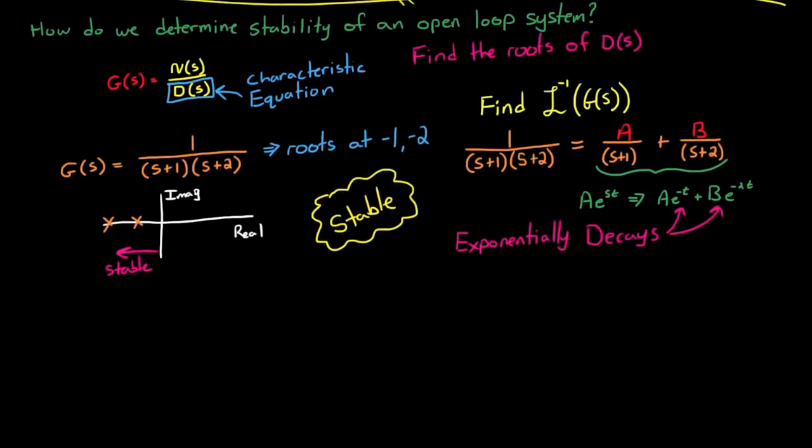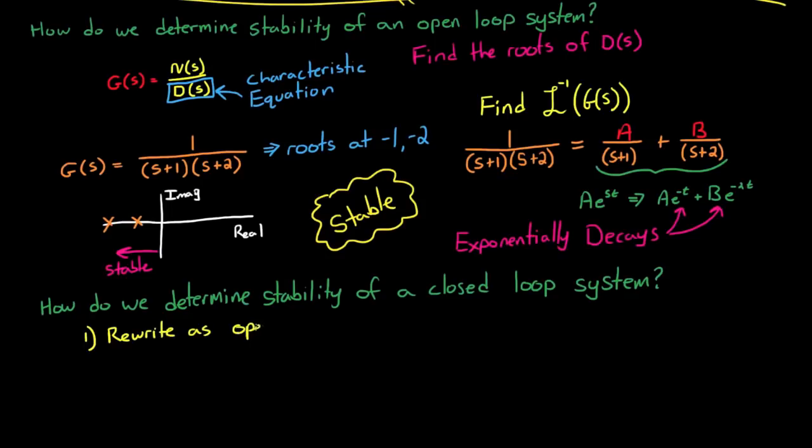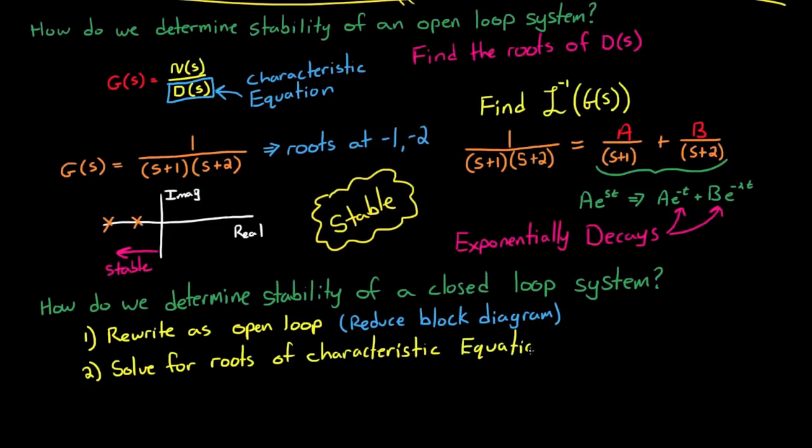So if that's how we determine stability of an open loop system, your next question might be, how is that any different than what we would do for a closed loop system? So your first guess for determining the stability of a closed loop system might be: one, rewrite the system as an open loop transfer function. That is, basically reduce the block diagram into a single transfer function. Two, solve for the roots of the characteristic equation. And then the third step would be to look at the real component of those roots and determine whether the system is stable or not. That seems easy enough, right? Well let's try it in practice.